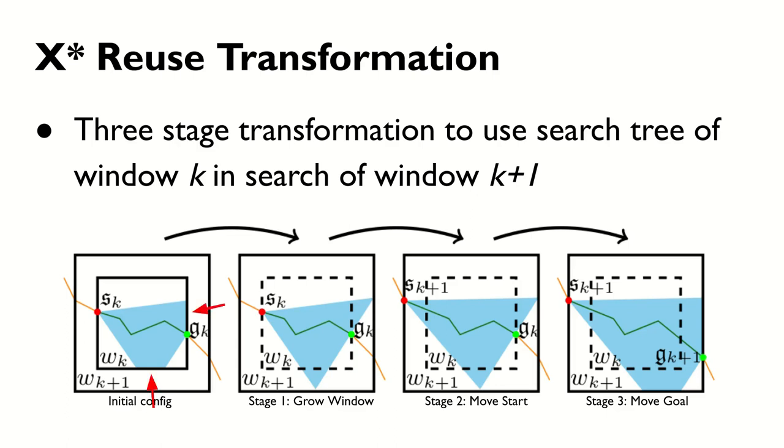In the first transformation, the existing search tree is modified in order to expand states inside window k+1 that were not expanded due to restrictions by window k. During the prior search, bookkeeping records the states that were not expanded during the search due to the constraints of window k in an out-of-window set. These states are added to the open set, and standard A* state expansion is run until all states in the open set with the same g-cost or fewer as the goal k have been expanded. This results in a valid search tree from start k to goal k inside window k+1.